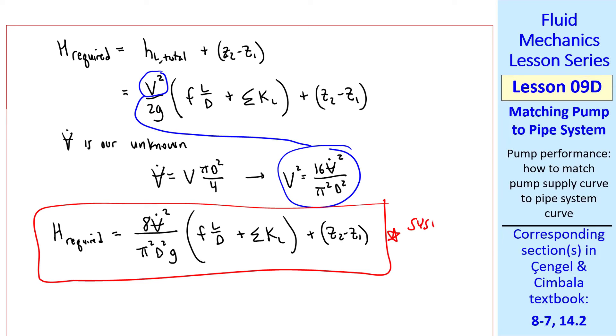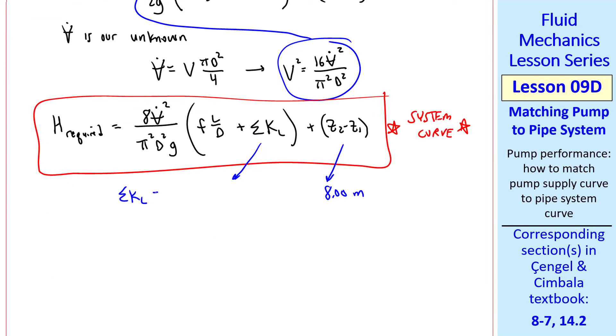Z2 minus Z1 was given 8.00 meters, and we sum up our minor loss coefficients: the entrance, the valve, the three elbows, and the outlet. We get 14.25. We also know L and D; our unknown is V dot. The only other thing we don't know is F.